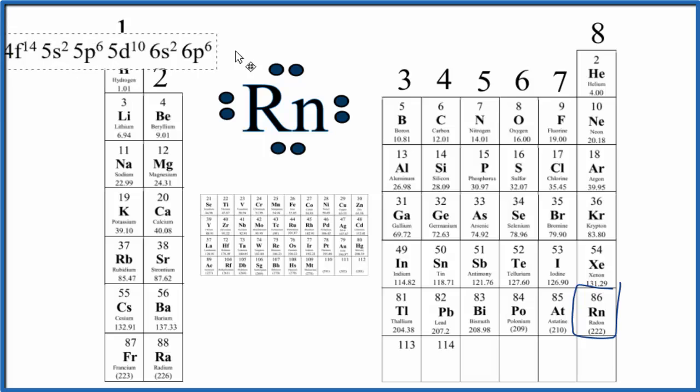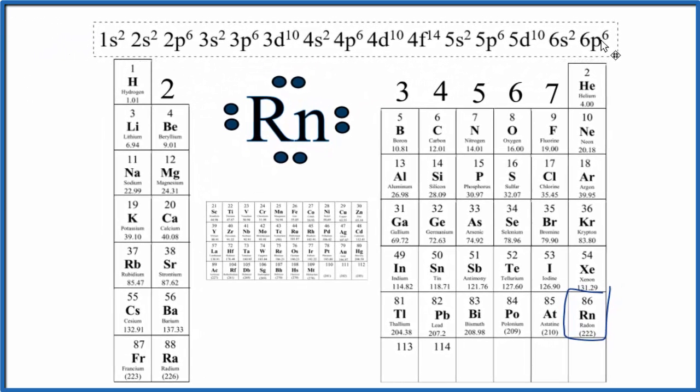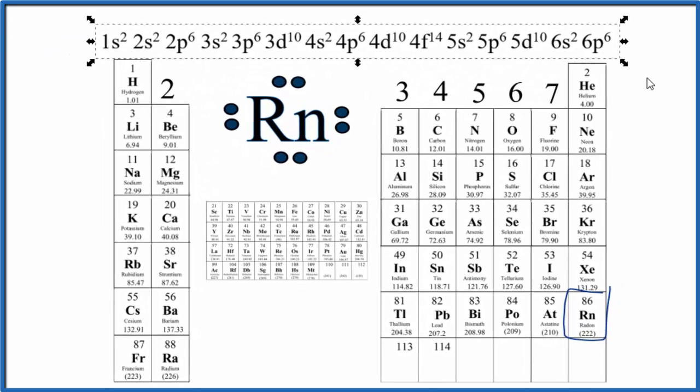We could also look at the electron configuration for radon, and that would help us figure out the valence electrons. So if we look at the configuration here and we find the highest energy level, that's the 6th energy level here, we have 2 plus 6, that gives us 8. So we have 8 valence electrons, just like we found by looking at the group number.